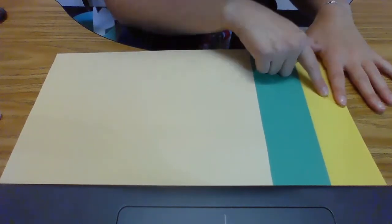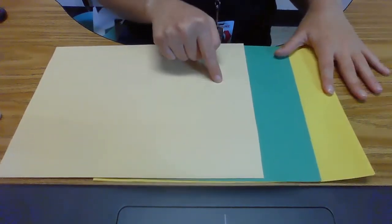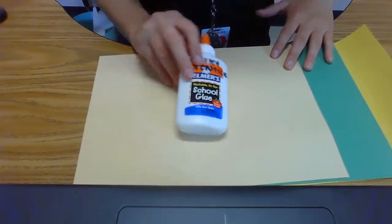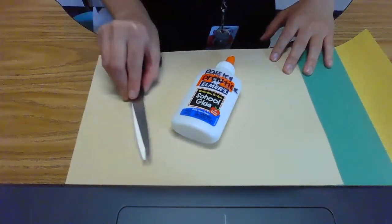What you're going to need is yellow paper, green paper, and tan or brown paper. You're also going to need some glue and some scissors.